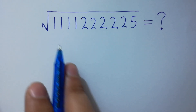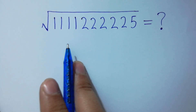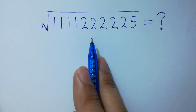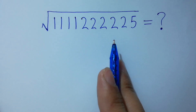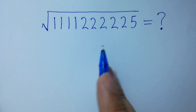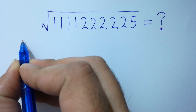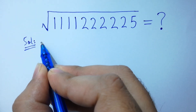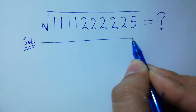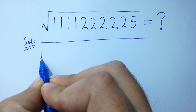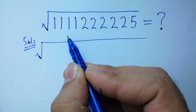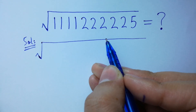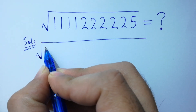Hello friends, how to simplify this problem: square root of 4 times 15 times 25, without using any calculator? Let's have a solution. Square root of 4 times 15 times 25.